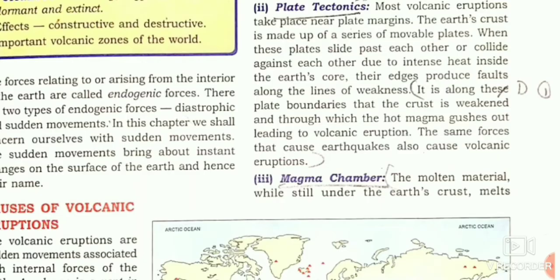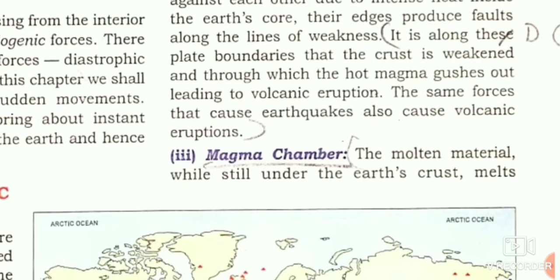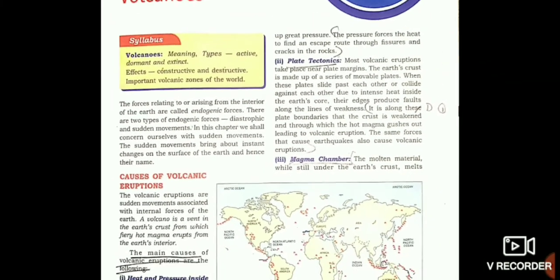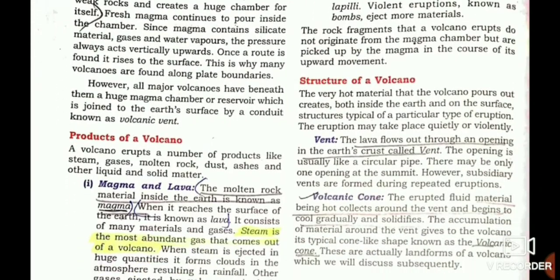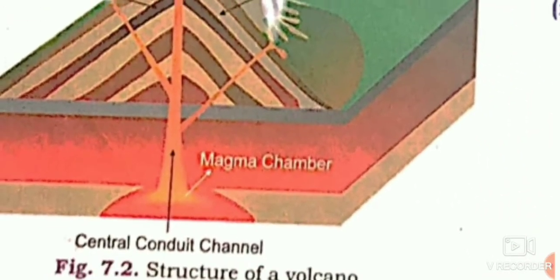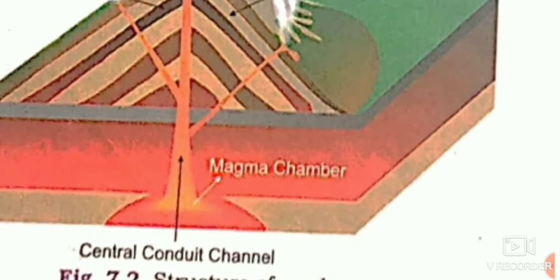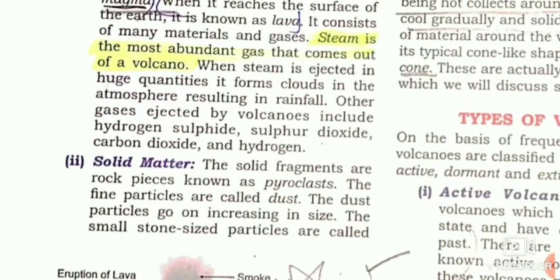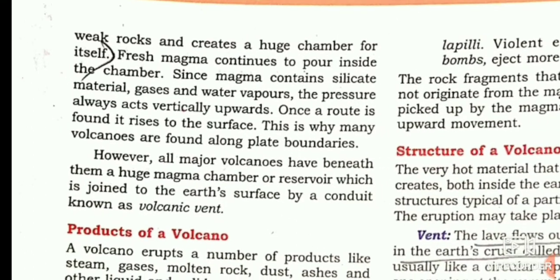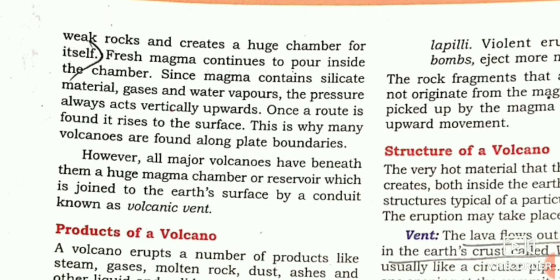The third cause is the magma chamber. The rock that melts inside the Earth's crust comes into a liquid state. When heat and pressure melt the rock, it forms a chamber. As you can see in the diagram, magma chambers contain molten rock material, and because of pressure, the pressure develops and lava comes out.